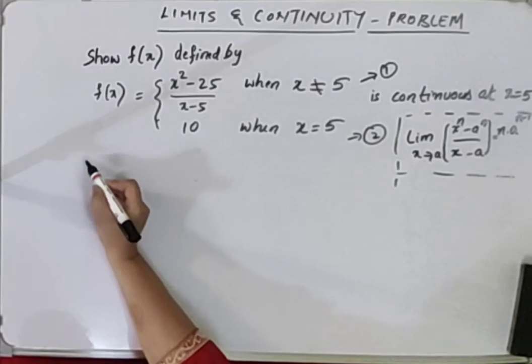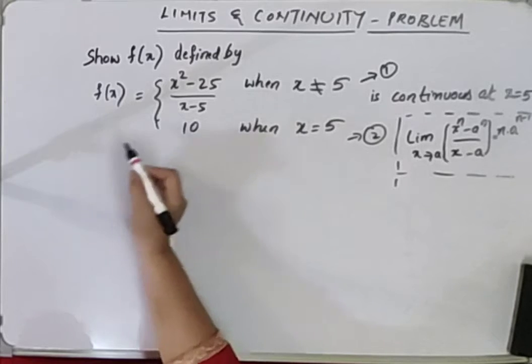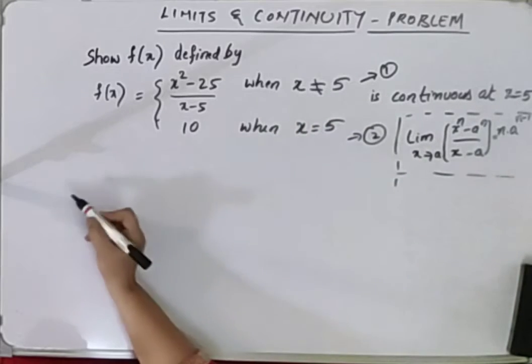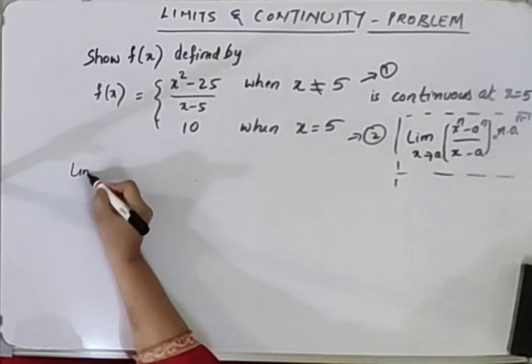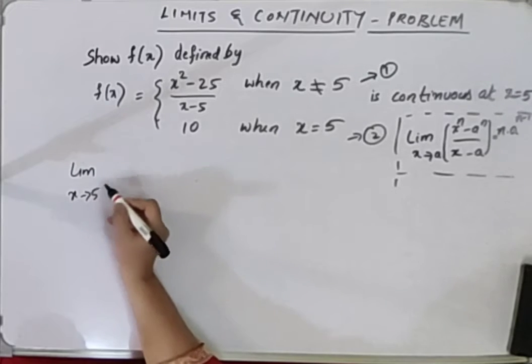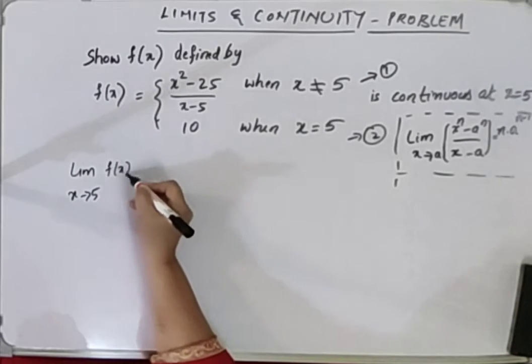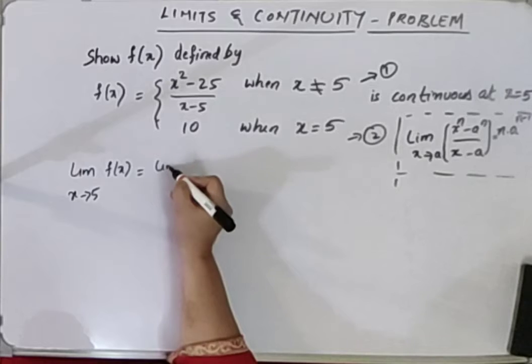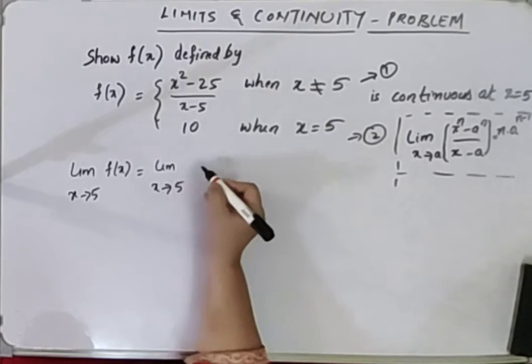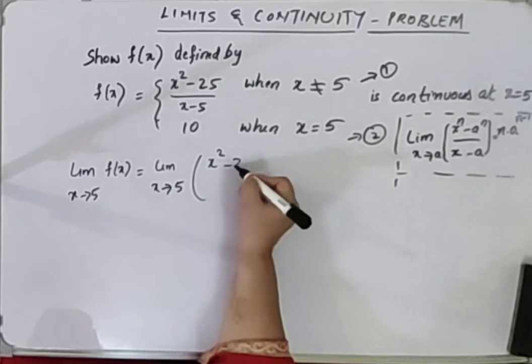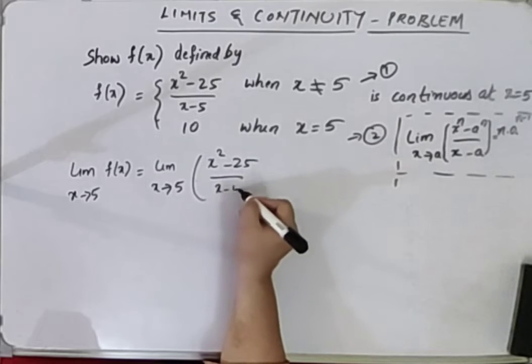Let's take the equation 1, let's take this as equation 1 and equation 2. Limit x tending to 5 for f of x is equal to limit x tending to 5 of x squared minus 25 over x minus 5.